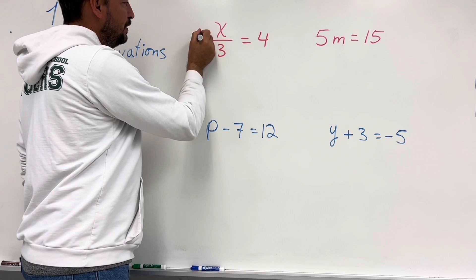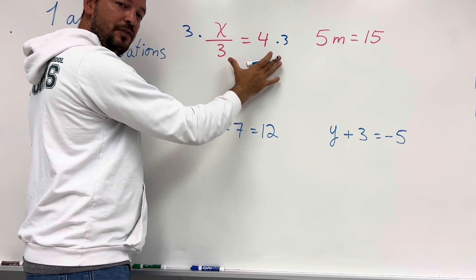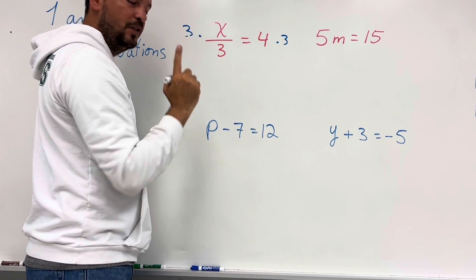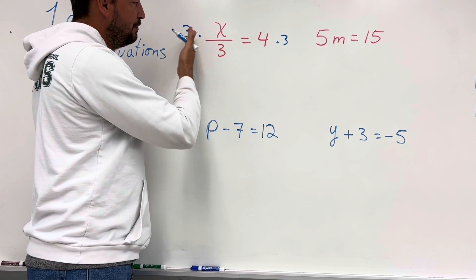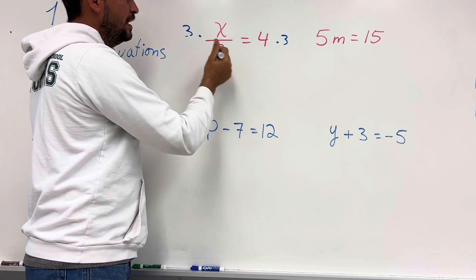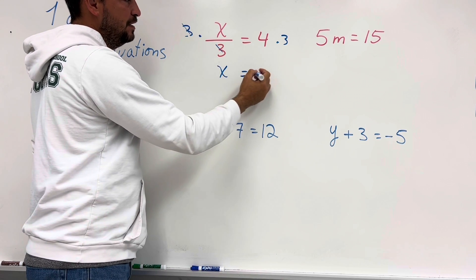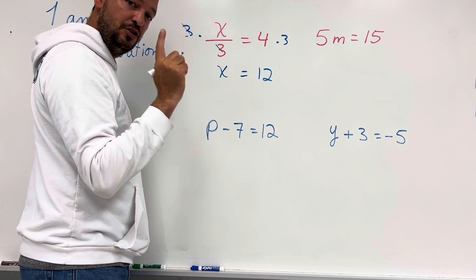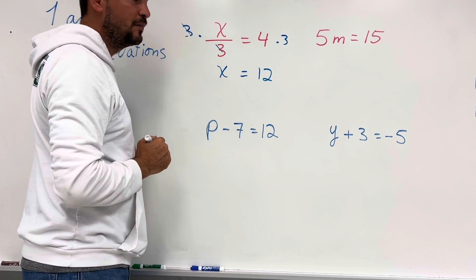What you usually do is multiply by 3 on both sides. We multiply by 3 because 3 divided by 3 is 1, and 1 times x is x. So we multiply by 3 on both sides, simplify, and you have x equals 12, because 4 times 3 is 12. That's it — solved in one step.